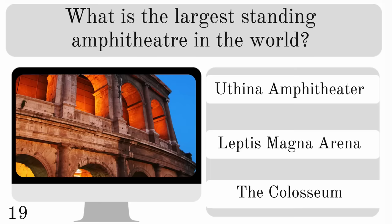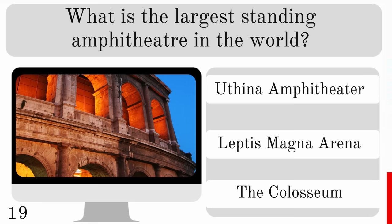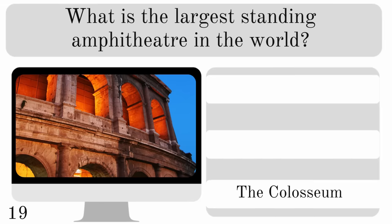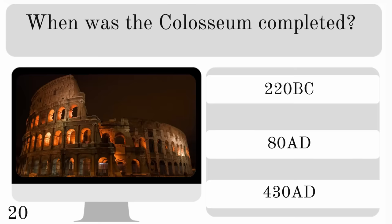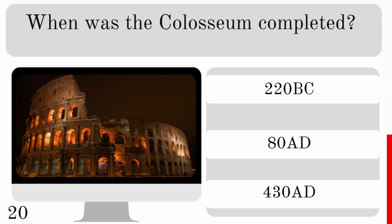What is the largest standing amphitheatre in the world? Is it the Euthena amphitheatre, Leptis Magna arena or the Colosseum? The largest is the Colosseum. So when was the Colosseum completed — 220 BC, 80 AD or 430 AD? There's also a bonus point if you know its original name. The answer is 80 AD.